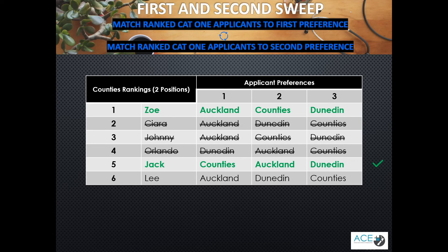At the end of this sweep, Counties will have one position available, but all of the other DHBs have filled their positions. That means their applicants go through a second sweep where applicants' second preferences are considered. The second sweep goes back to the top of the ranked applicant list. Zoe has ranked Counties second, which means that she is matched to them in the second sweep. Counties have now filled their positions, and so the match is now complete.